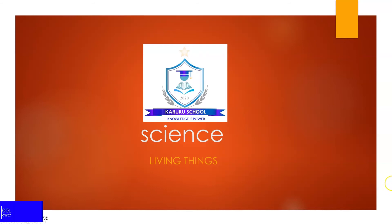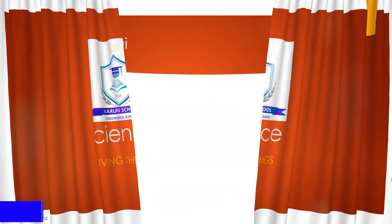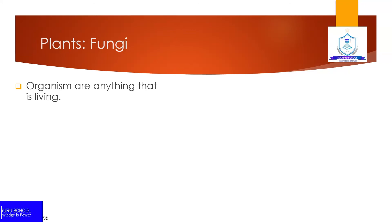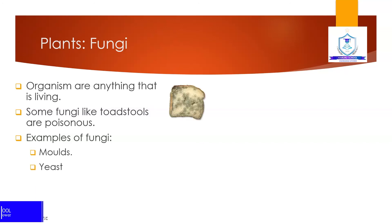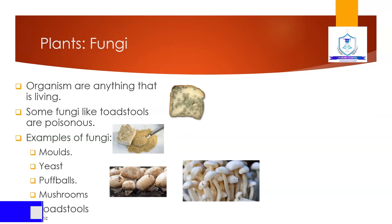Hello everyone, today we are going to learn science — living things. Plants and fungi are organisms that are living. Some fungi like toadstools are poisonous. Examples of fungi include molds, yeast, puffballs, mushrooms, and toadstools.